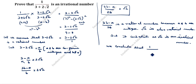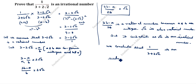Therefore, we conclude that 1 divided by 3 plus 2 root 2 is an irrational number.